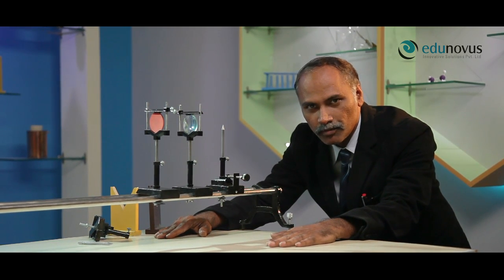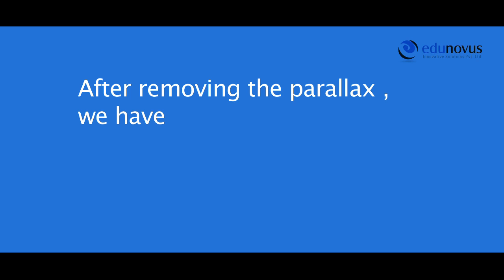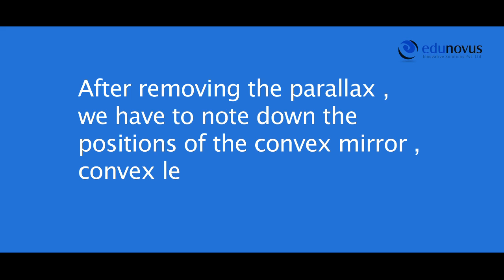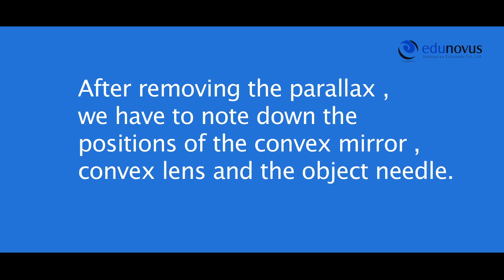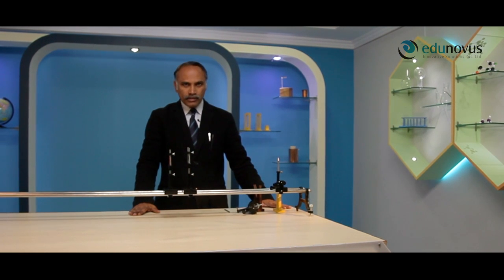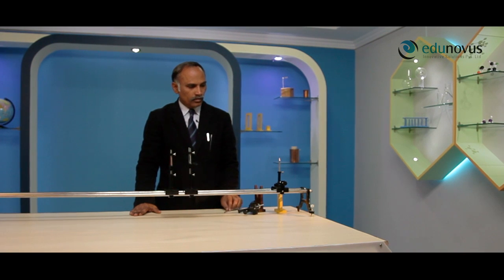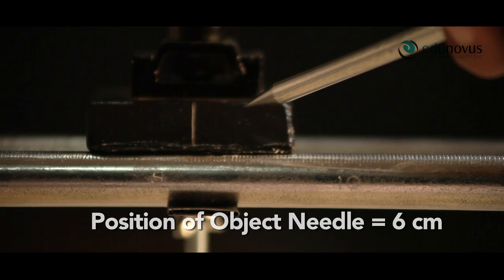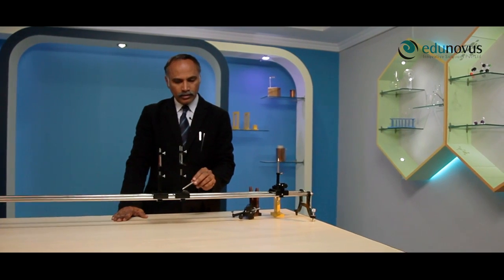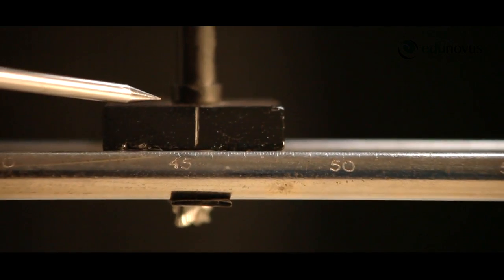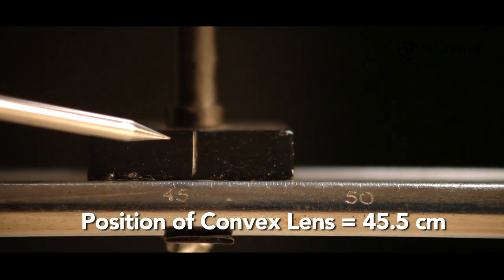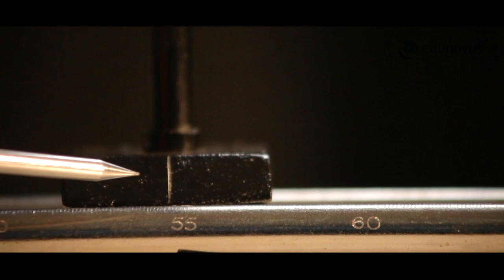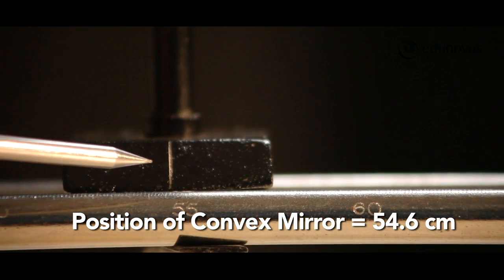Now, as we move our eye to the left and right, there is no relative shift between the object needle and its inverted image — parallax is removed. After removing the parallax, note down the positions: the object needle is at 6 centimeters, the convex lens is at 45.5 centimeters, and the convex mirror is at 54.6 centimeters.